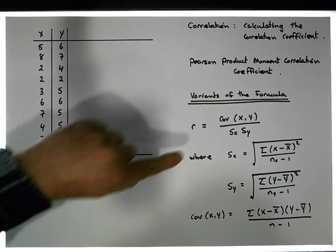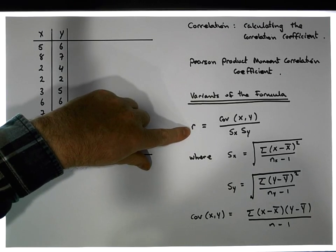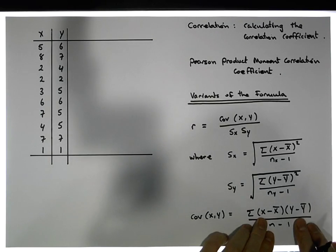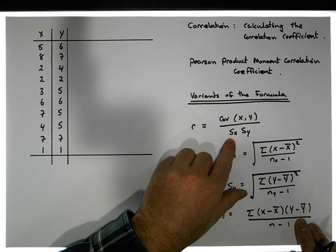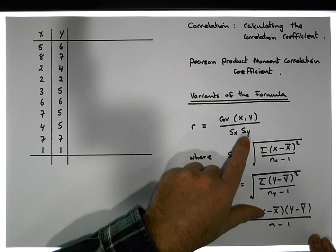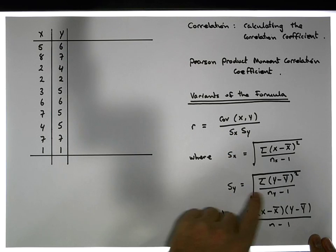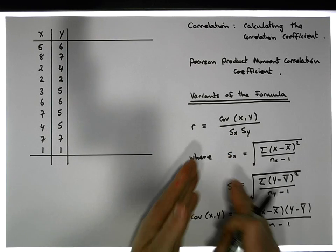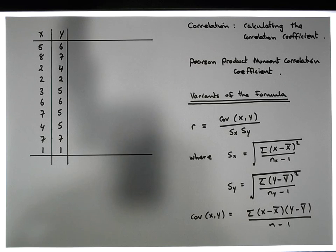So if I want to calculate the correlation coefficient, I could calculate the covariance first, then calculate the standard deviation of x, and then calculate the standard deviation of y. With those three values I end up with the correlation coefficient.